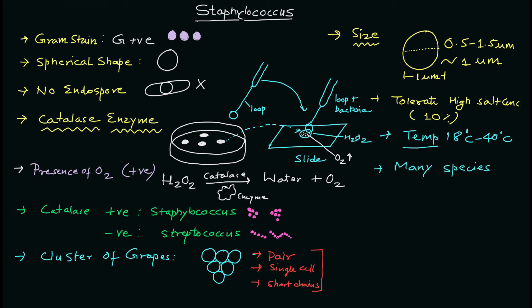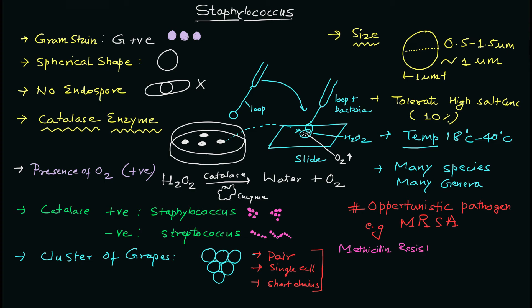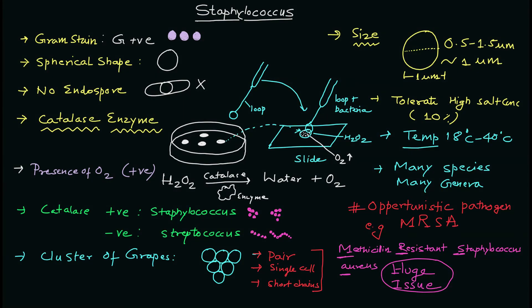In this particular genus you will have a lot of different species, and one of the important species is the opportunistic pathogen MRSA — methicillin-resistant Staphylococcus aureus. MRSA is a huge problem. Many of the species are living freely in the environment and on our body; some of them are potential opportunistic pathogens. There are so many important features when we study Staphylococcus, and we're going to cover them in our next video.